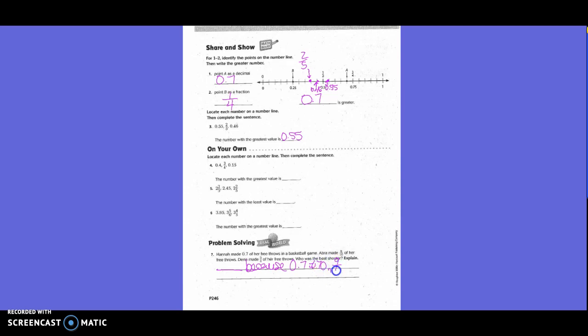Let's make a number line because 7 tenths is equal to 70 hundredths. 9 tenths is equal to 90 hundredths. And 3 fourths is equal to 75 hundredths. So who had the best percentage? Abrea.